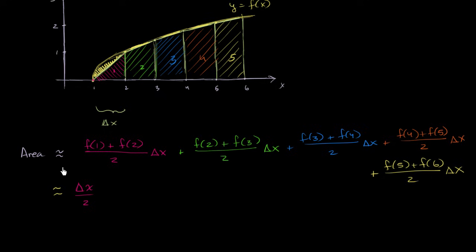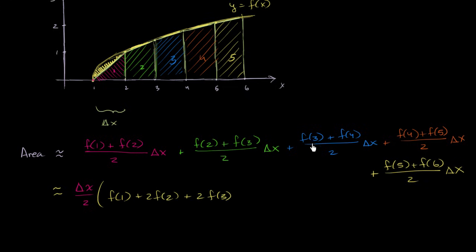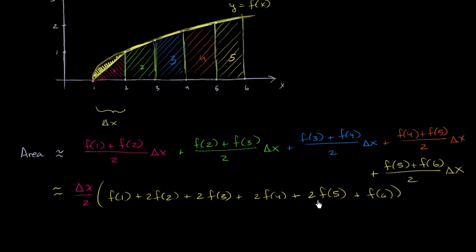After factoring out delta x over 2, we're left with: f(1) plus 2·f(2) plus 2·f(3) plus 2·f(4) plus 2·f(5) plus f(6). In general, you have one of the first endpoint, one of the last endpoint, and two of all the rest. This is just the summed area of the trapezoids — I'm not a big fan of when textbooks write it this way, because it's harder to visualize than writing out the individual trapezoid areas.